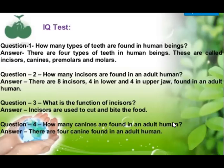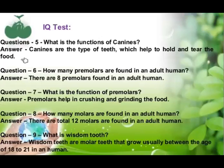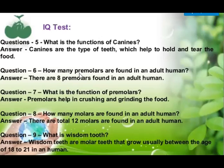How many canines are found in an adult human? There are four canines found in an adult human. What is the function of canine teeth? Canines are the type of teeth which help to hold and tear the food. That is why they are known as tearing teeth. How many premolars are there? There are eight premolars found in an adult human.